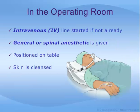Once in the operating or treatment room, an intravenous or IV line will be started if not done already. You will then be put to sleep by the anesthesiologist, and a breathing tube will be introduced. Alternatively, you may be given freezing medication in your back, which numbs the body from the waist down. Finally, you will be positioned on the operating table with your legs up in stirrups, and your skin will be cleansed with an antibacterial solution.